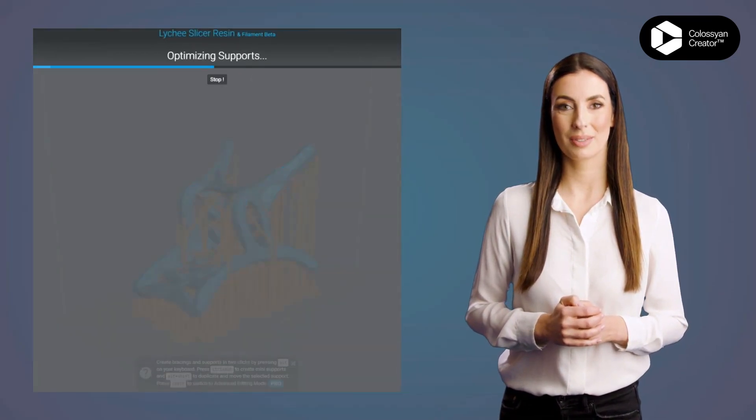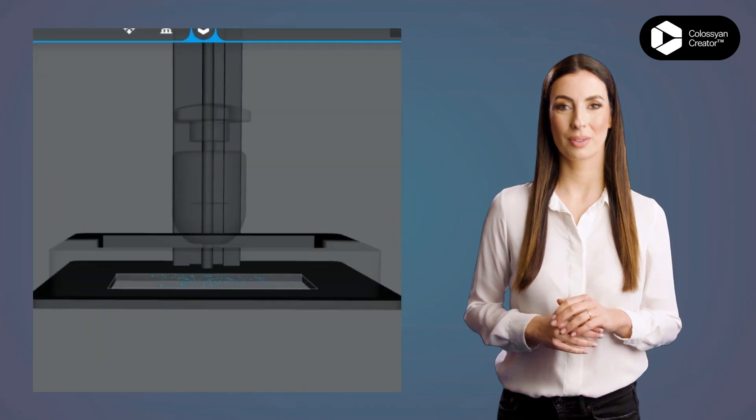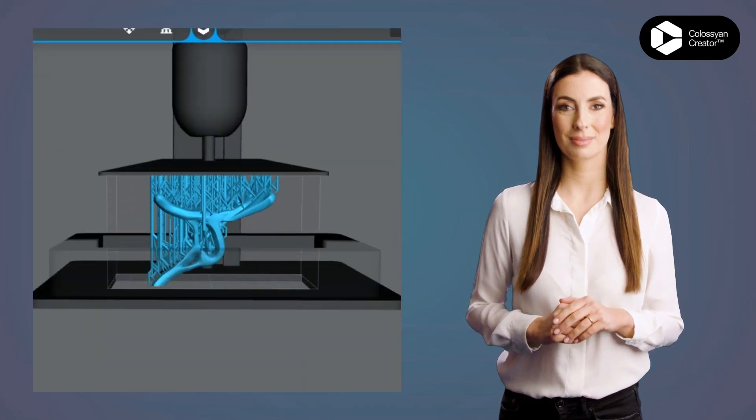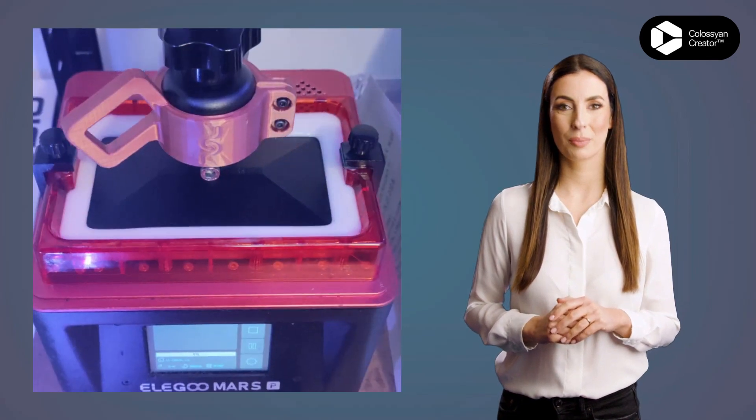Support structures generated in a slicer and the print preview is visualized. Build plate inserted and the 3D print begins.